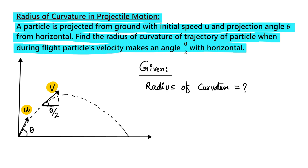At any point in time, the projectile is moving along a circle — the trajectory is a part of a circle at every instant. At any given point, we need to find the corresponding radius, which will be the radius of curvature. So here I have to find this radius.